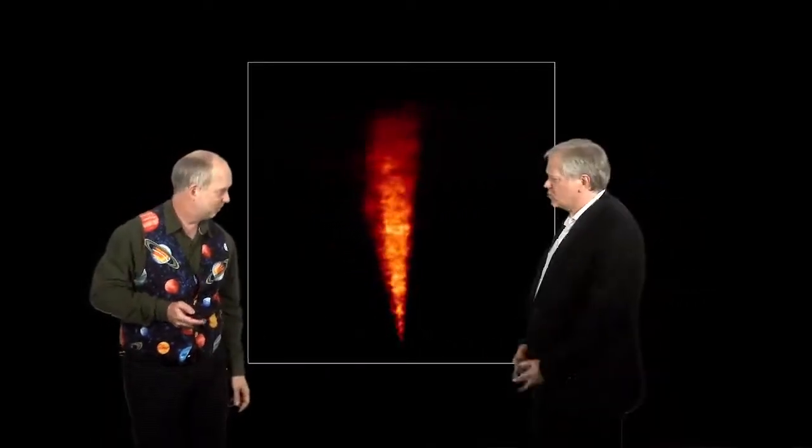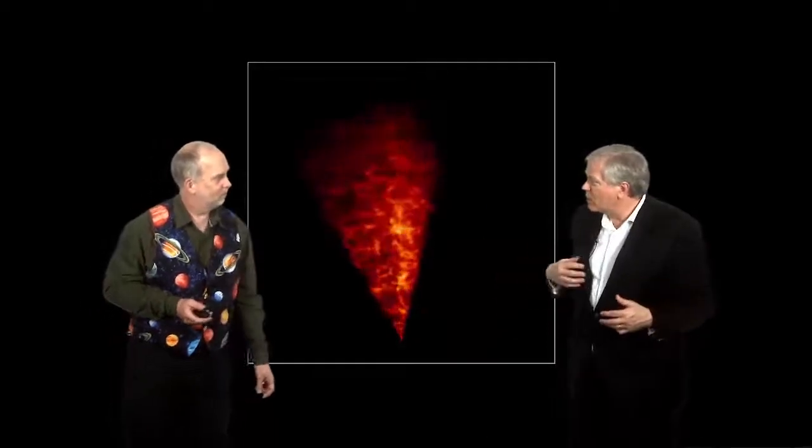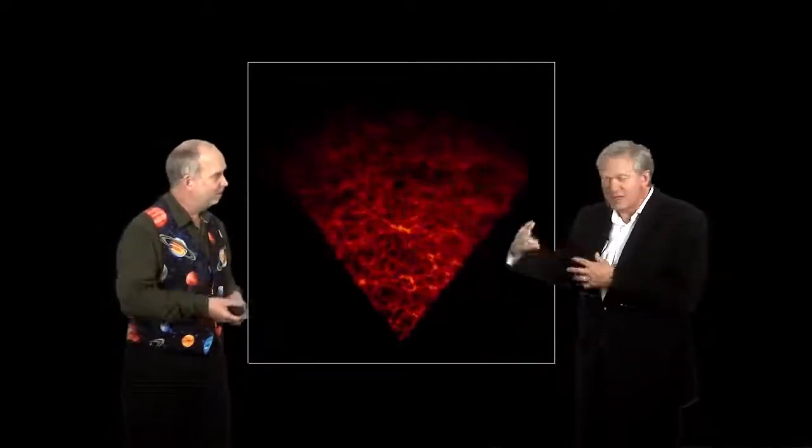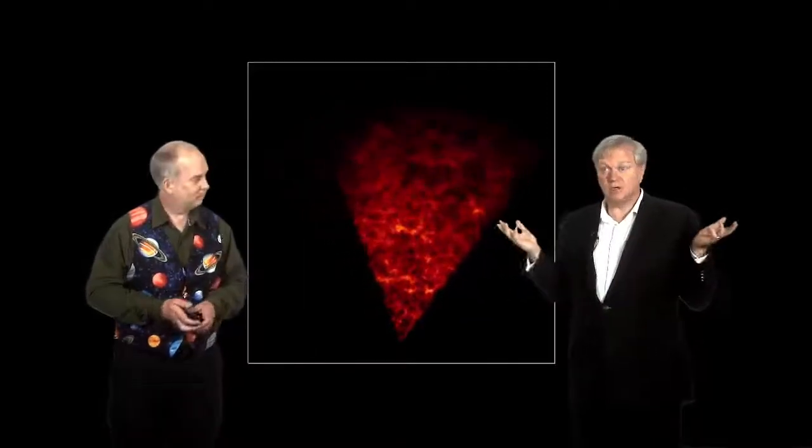So the idea would be that these tiny quantum fluctuations that happened to be happening just at the moment when inflation took off would get stretched enormously. And so a fluctuation that might have been the size of an electron ends up forming a supercluster of galaxies today. And one of the interesting things is normally if you think of Paul and I as being a set of quantum fluctuations, we are formed, but because the universe is exponentially expanding in that very tiny period of time allowed by the Heisenberg Uncertainty Principle, we've expanded so much that now we're further than the speed of light can connect us.